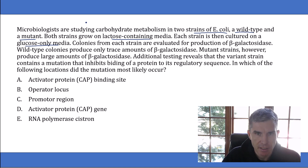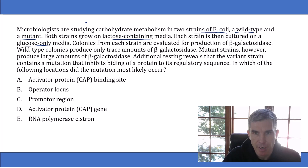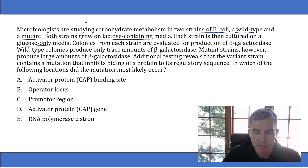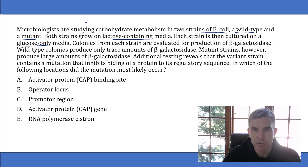The lac operon is a sequence of genes found in bacteria that become active to metabolize lactose, but the genes only become active if two things are present: there has to be lactose available, and there has to be no glucose. If these two things aren't present, the bacteria cannot metabolize lactose. Bacteria evolve to preferentially metabolize glucose — that's what they always want to use for fuel.